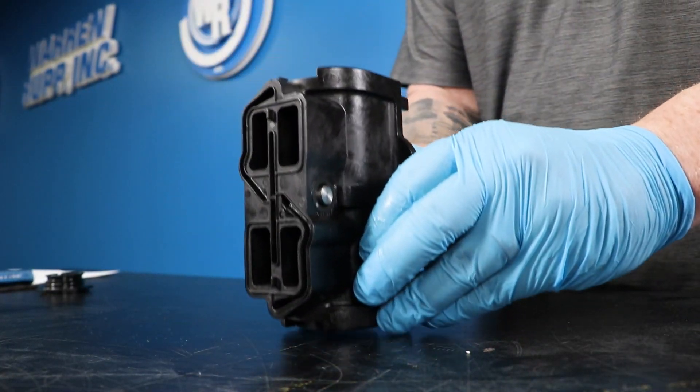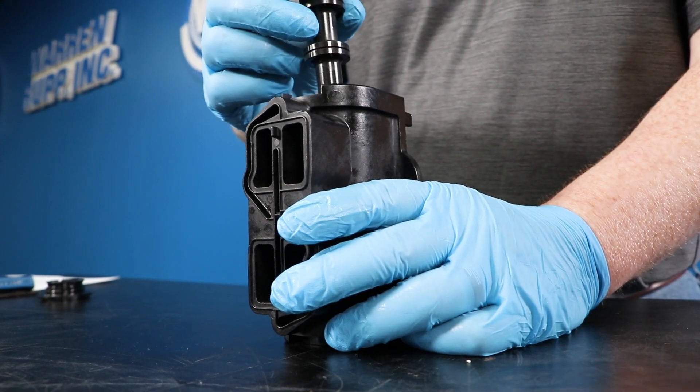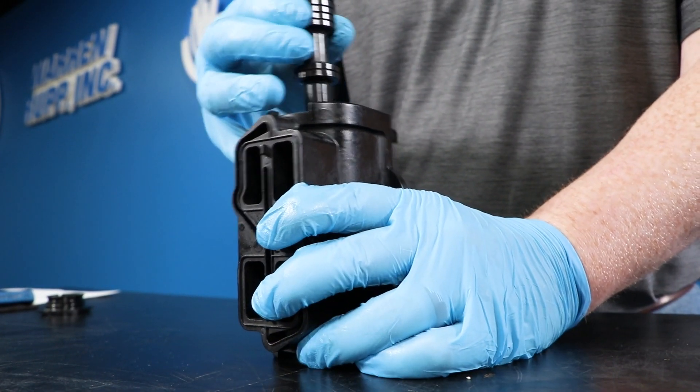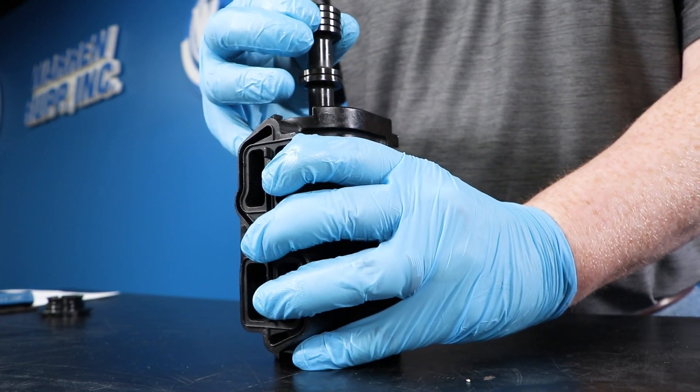Then insert the spool and repeat this process for the end cap on the other side of the valve body. Note that the sleeve and spool are a match set. If one gets damaged, you'll need to replace the pair.